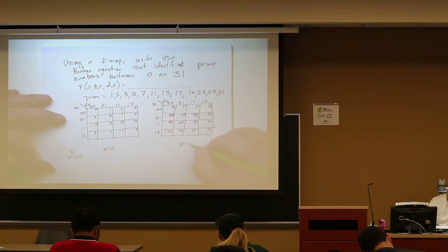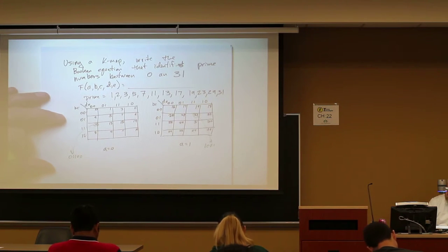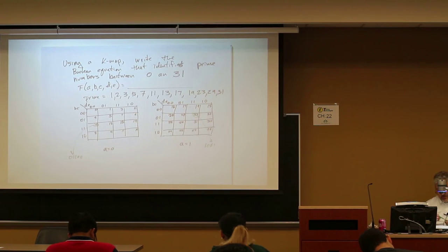That is A is equal to 1, B is 0, C is 1, D and E are 1, 1. So I know that this 1 here means 16, these 3 right here is 7, 16 plus 7 is 23. Yep, that's what that is.